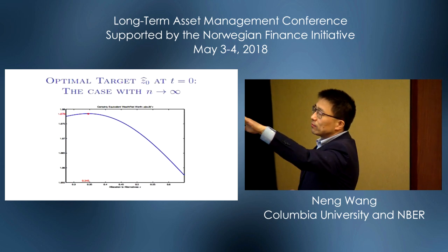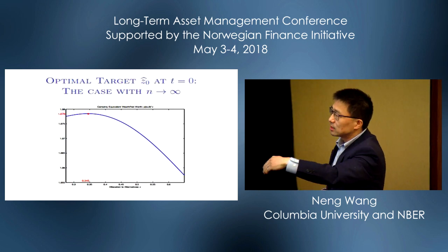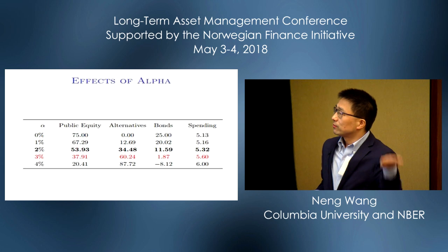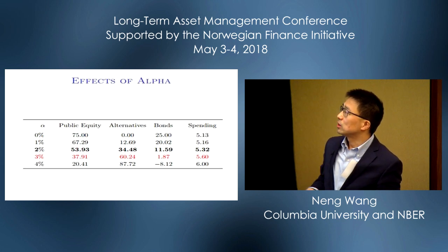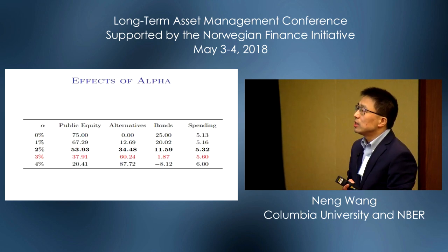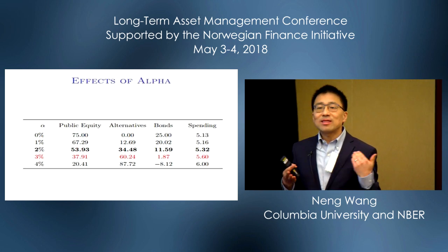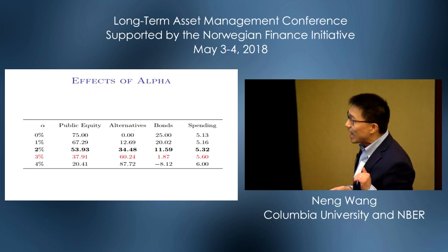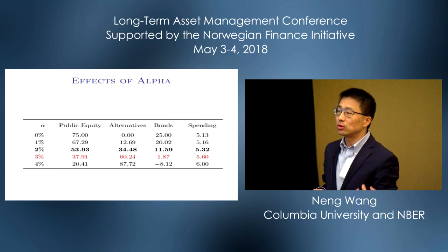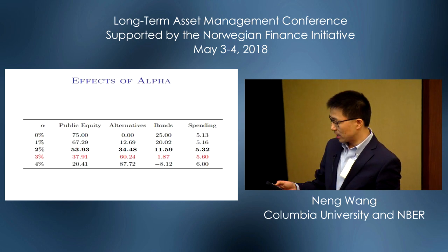The horizontal axis is allocation to illiquids out of your total portfolio; the vertical axis is how well you do. With reasonably calibrated parameter values, it's not that hard — with 2 to 3% alpha from illiquid alternatives — to generate something between 34 to 60% allocation to alternatives, which is more or less what people do. And of course it comes at the cost of crowding out fixed income and public equity. That's the alpha effect.